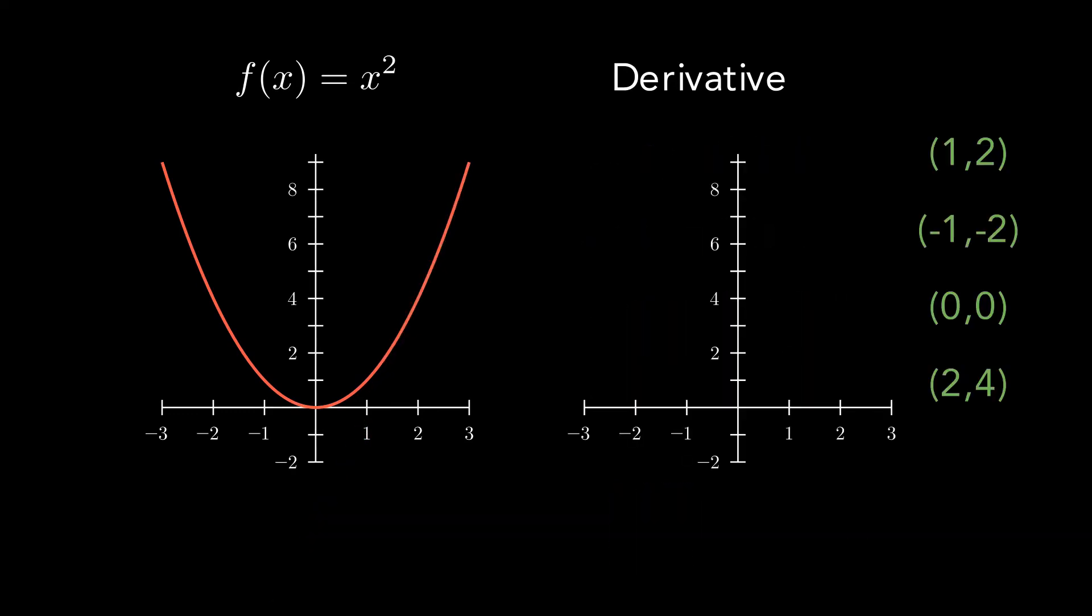Let's plot these four values of the derivative on a separate graph. It looks like that for any x, the derivative of x squared is equal to 2x.